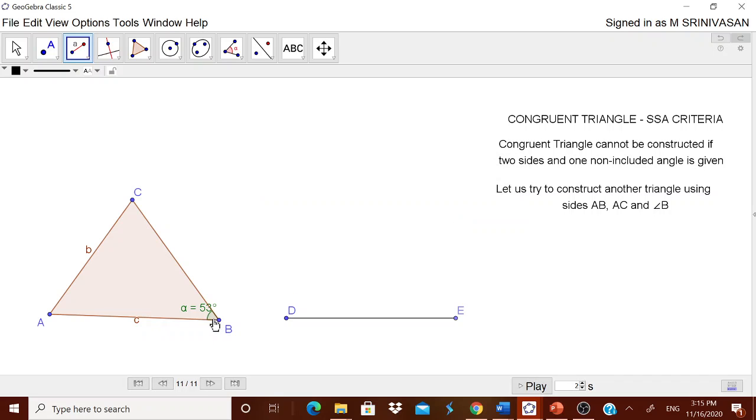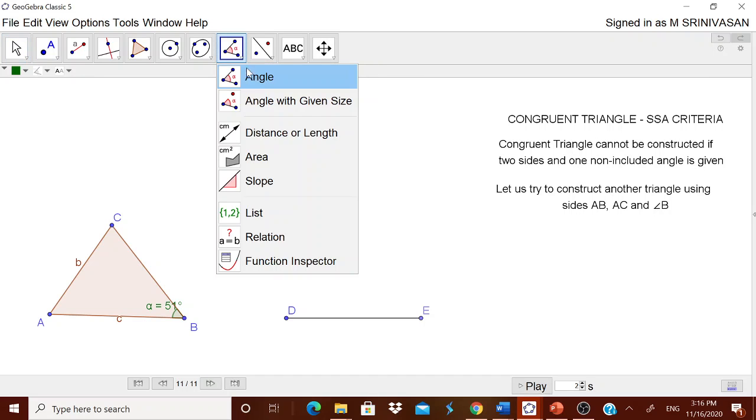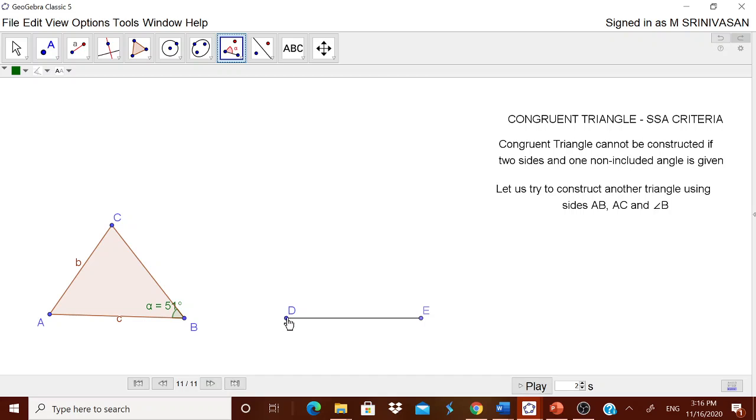Okay, now when I move this you are seeing, when I move this that also moves. That also moves, there would be no problem. Okay, now I want the same angle at B, the same angle at E also. Go for this angle, or go for this angle with the given size.